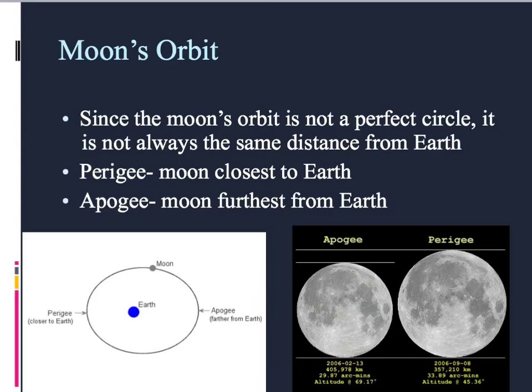Like we just talked about, since it's not a perfect circle around Earth, there are points where the moon is closer to Earth, and then there are points where the moon is furthest away from Earth. So just like perihelion, aphelion, perigee is where the moon is closest to the Earth.